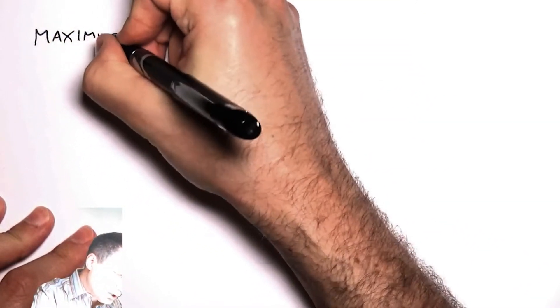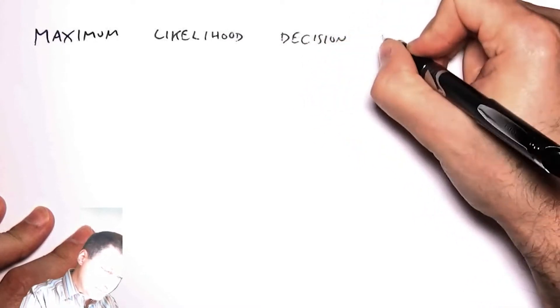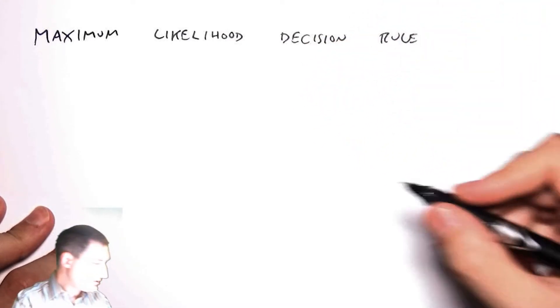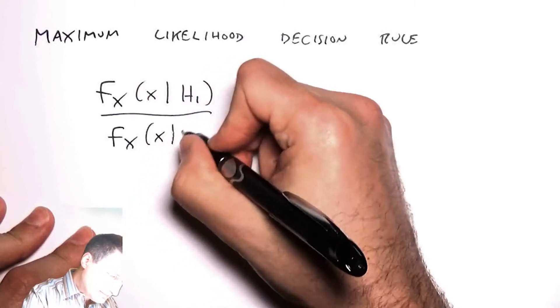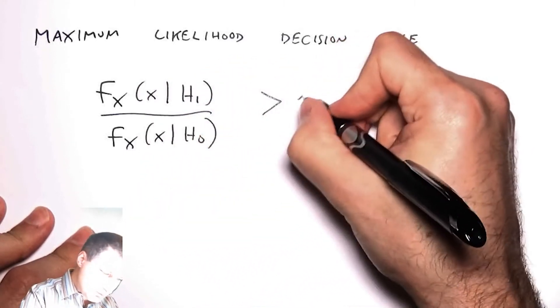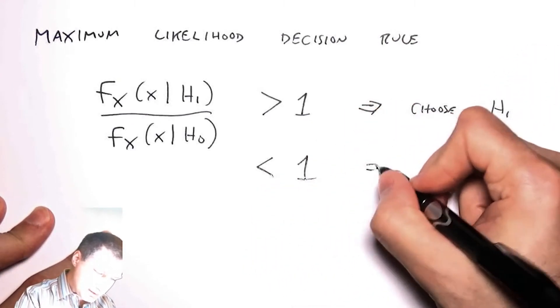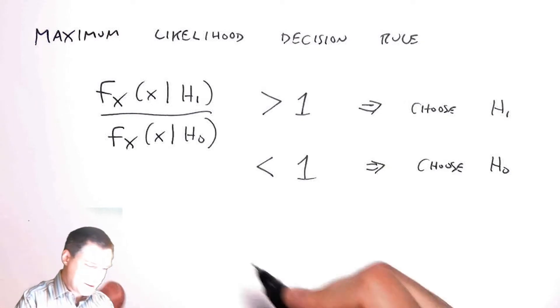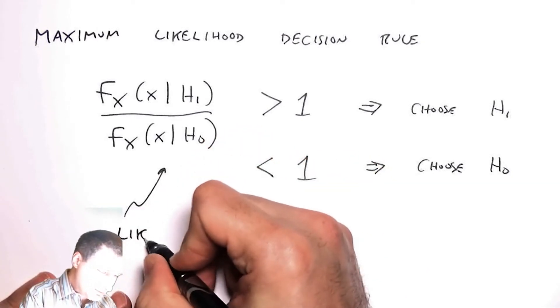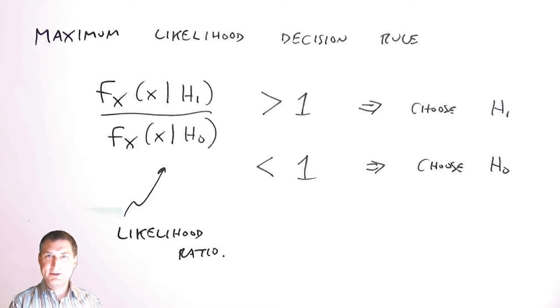So you may remember that we talked about the maximum likelihood test for making these decisions. The maximum likelihood decision rule, and we can refer back to a previous lesson for what this was, basically said if this ratio was greater than 1, then I should choose H1. And if it's less than 1, I should choose H0. And in the middle, it's just a coin flip. And so this thing here is called the likelihood ratio.